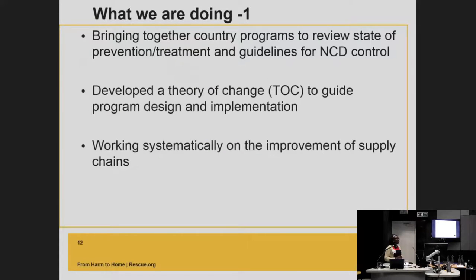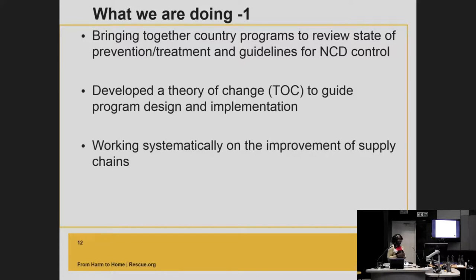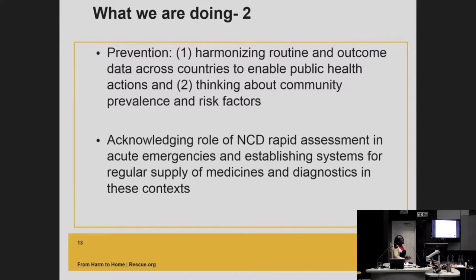So what are we doing? We're bringing together countries that have identified NCDs as a priority to review the state of prevention, treatment, and guidelines for NCD control, and also linking with the efforts of the NCDs in Humanitarian Crisis working group led by UNHCR so that this is done in a cohesive way. We've developed a theory of change to guide program design and implementation, and are also working systematically to improve supply chains. On the prevention side, we need to harmonize routine and outcome data across countries to enable public health actions and think about community prevalence and risk factors. On the emergency side, we're including NCDs in rapid assessments and establishing systems for regular supply of medicines and diagnostics.